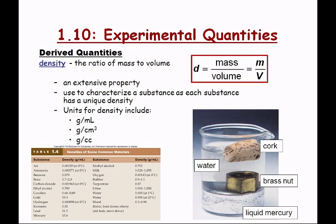Let's talk about our first derived quantity. All the quantities we've been talking about so far have been directly measured — we can take something, put it on a balance, get the mass. We can dunk it under water and get the volume. We can put a thermometer on something and get the temperature. The first derived quantity — something where we take those basic quantities and use them to create a new quantity — is density.